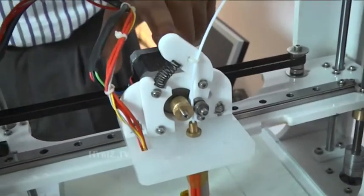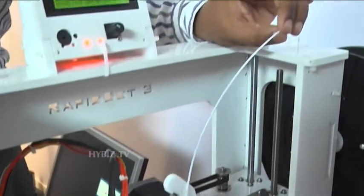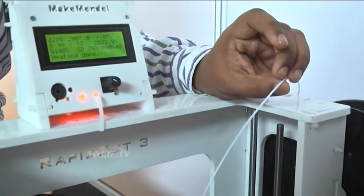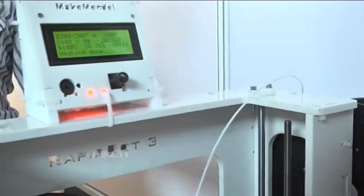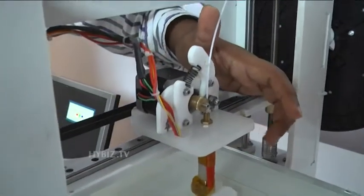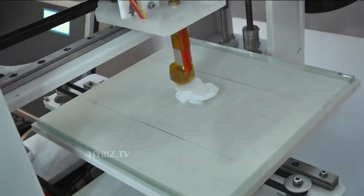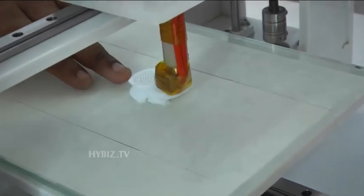This extruder will feed this plastic material. This plastic material is basically 3D printable PLA polylactic acid plastic which is eco-friendly. This motor feeds this plastic material into this brass element hotend. This hotend will heat it at about 185 degrees Celsius and it will start melting. Layer by layer, an object is formed.